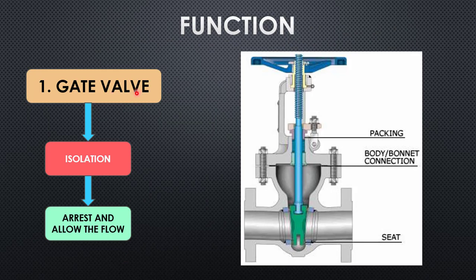Let's start with the first valve — the gate valve. The purpose of the gate valve is isolation: it is used to arrest and allow the flow. Looking at the cross-section schematic, you can see the wedge inside. When the handle is rotated clockwise, the wedge comes down to arrest the flow; when rotated anticlockwise, the wedge goes up to allow the flow.